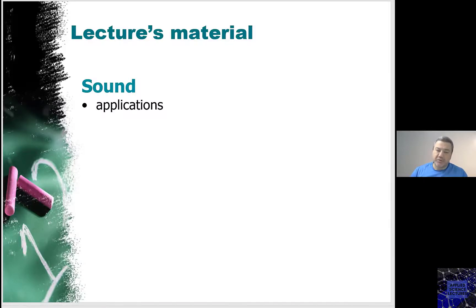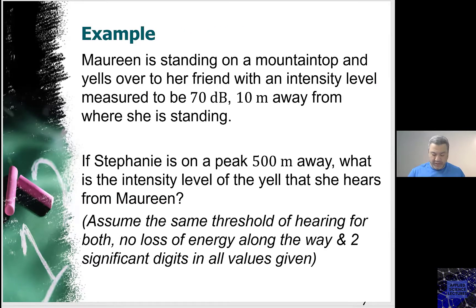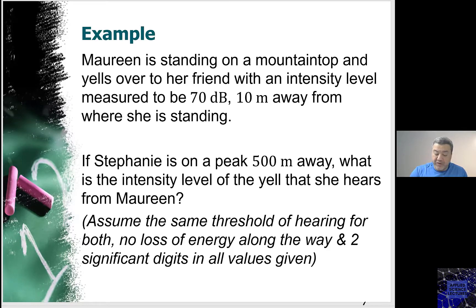Good morning everyone. We will continue today with the sound lectures. We'll start with solving an example using what we have learned in the last lecture. In this example, Maureen is standing on a mountain top and yells over to her friend, with an intensity level measured to be 70 dB, 10 meters away from where she is standing. If Stephanie is on a peak 500 meters away, what is the intensity level of the yell that she hears from Maureen? Assume the same threshold of hearing for both, no loss of energy along the way, and two significant digits in all values given.